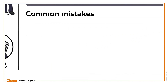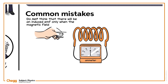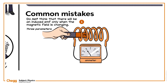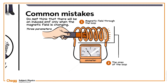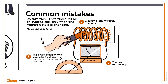Let's talk about some potential common mistakes. Do not think that there will be an induced EMF only when the magnetic field is changing. The magnetic flux through a loop depends on three parameters: the magnetic field through the loop, the area of the loop, and the angle between the magnetic field and the normal to the plane of the loop. If any of the three parameters is changing, there will be a change in the magnetic flux, and so the EMF will be induced in the loop.